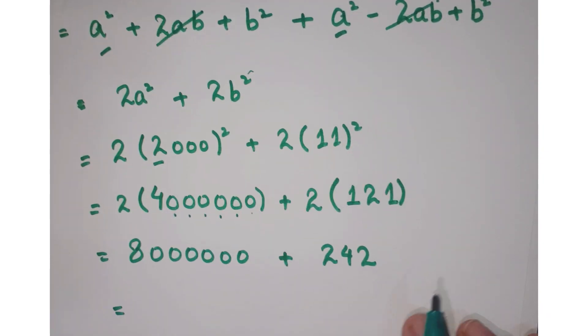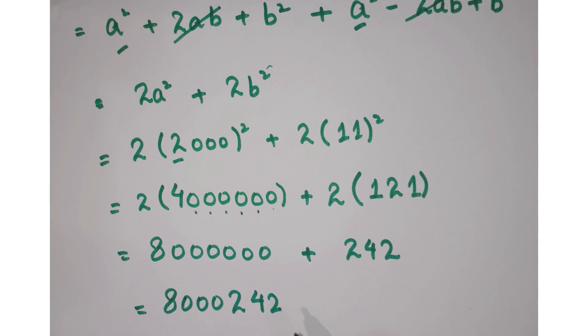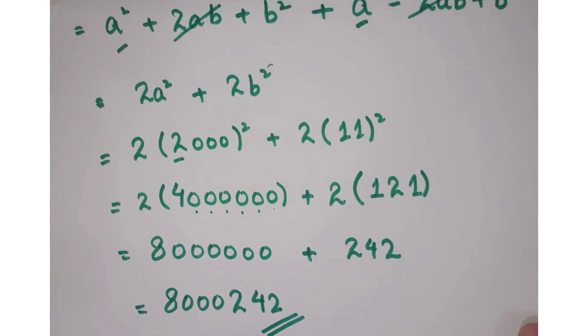Now how are you going to add up? You have 3 terms: 8000000 and this is 242. And this is our required answer.